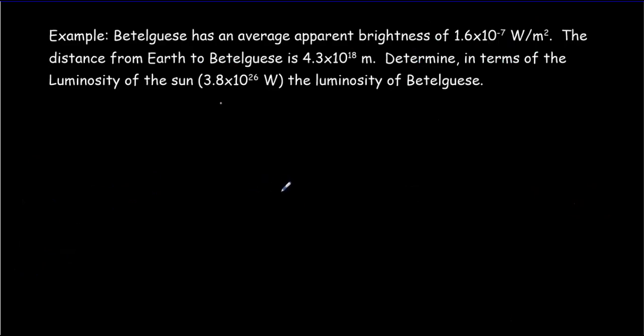Let's try a word problem. We're looking for the luminosity of Betelgeuse. I'm going to use LB for the luminosity of Betelgeuse. We know that the brightness or intensity of a star is given by the luminosity divided by 4 pi d squared. If I want to solve for luminosity, in this case Betelgeuse, it's going to equal 4 pi d squared times the brightness.